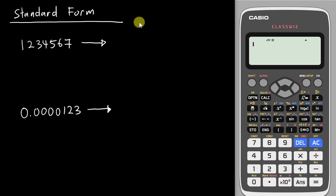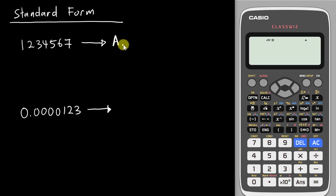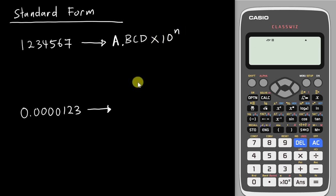Before I start to teach you the calculator skill, I want you to understand the standard form manually. What's the meaning of standard form? Standard form basically is you need to get a result that is one digit followed by a decimal, and then after that you can have other digits — it doesn't matter. And then you multiply 10 to the power of n. This is the pattern of the standard form.